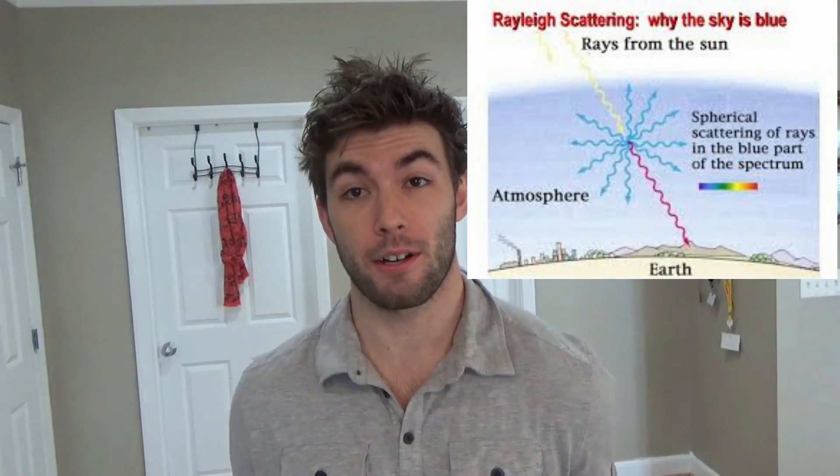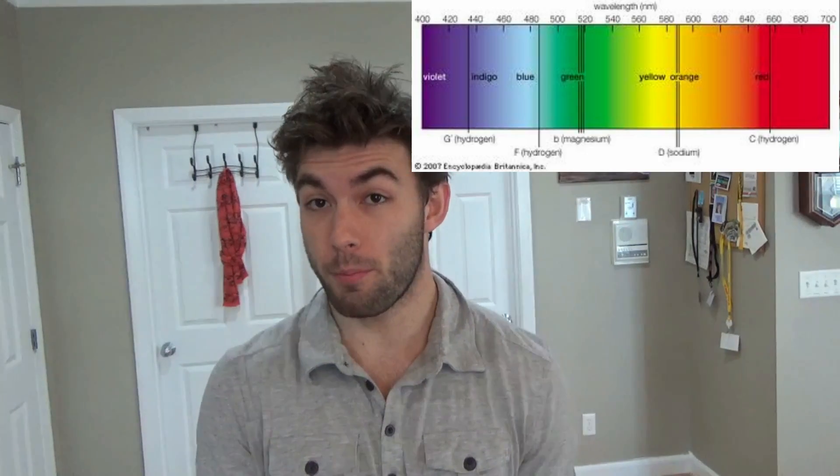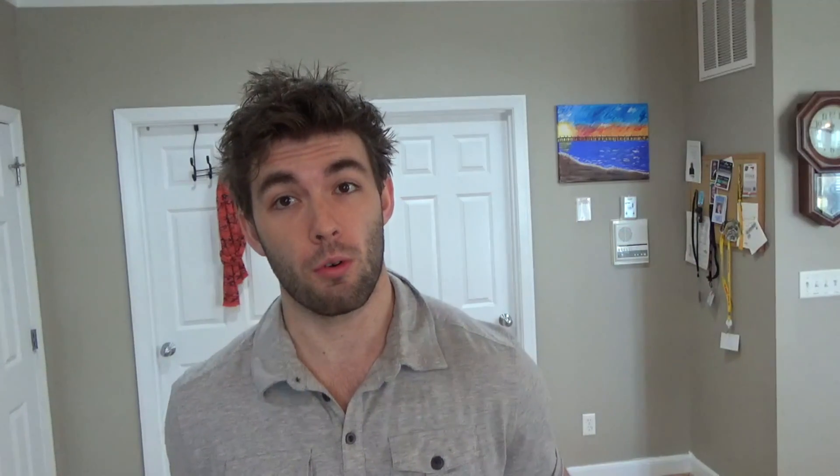In that explanation, the sky is basically described as one big mirror that reflects. But based on the title of the video, that's not actually the reason. The sky is actually blue because of a process called Rayleigh scattering. Rayleigh scattering works by photons coming in from the Sun and scattering off of air molecules. When these photons hit the air molecules, they scatter in all different directions, emitting every wavelength of the visible spectrum, ranging from blue to red.